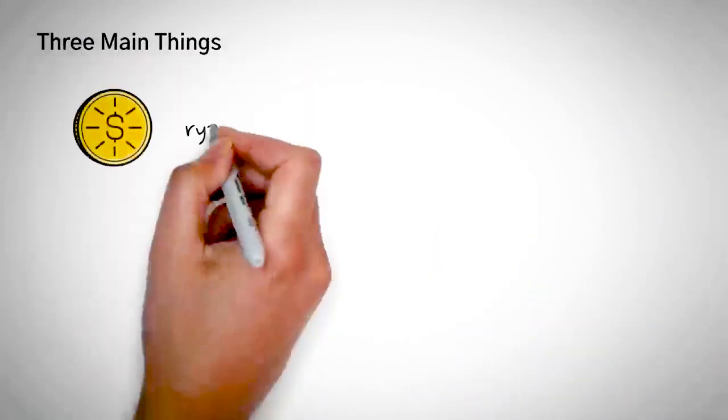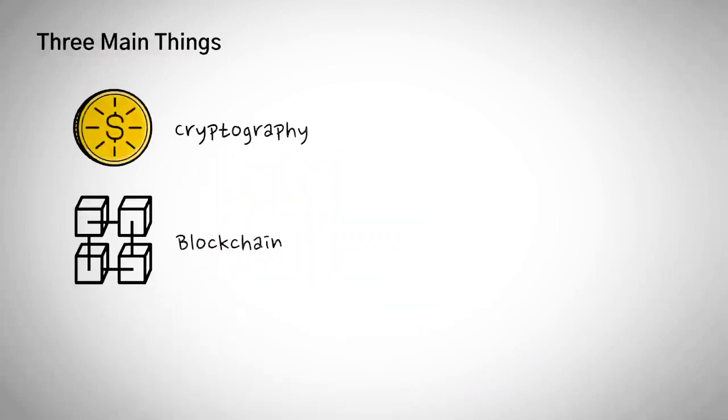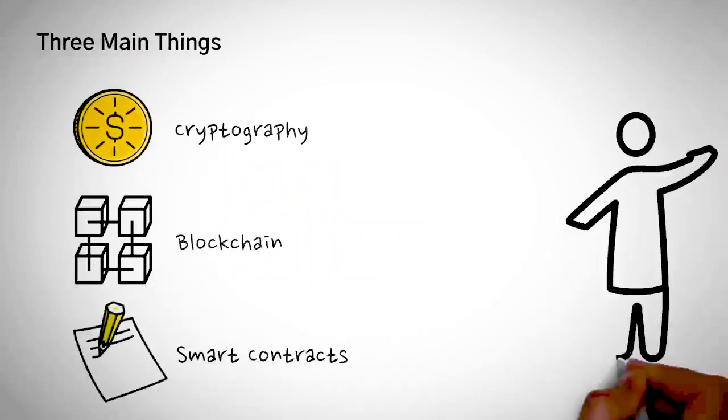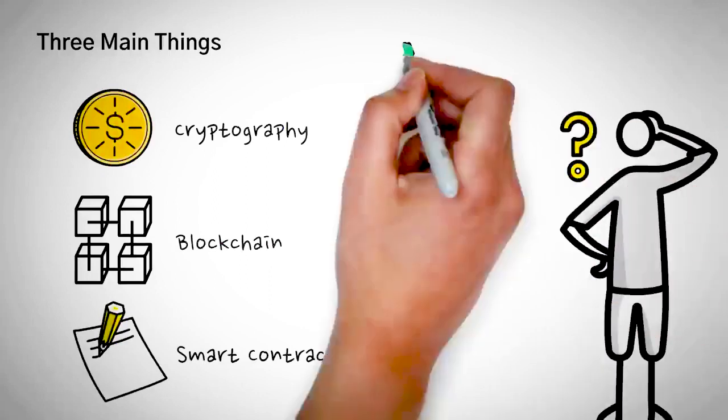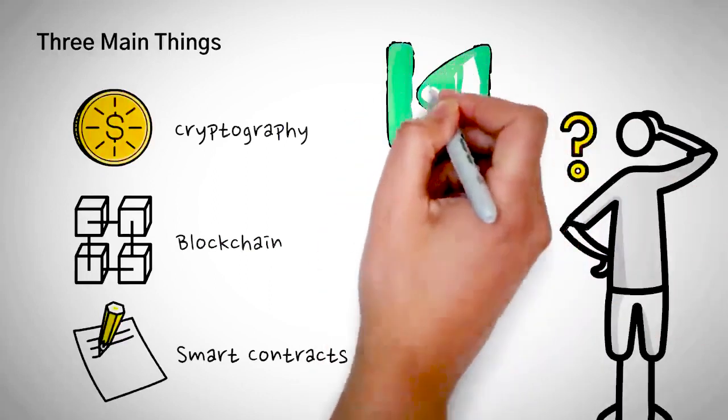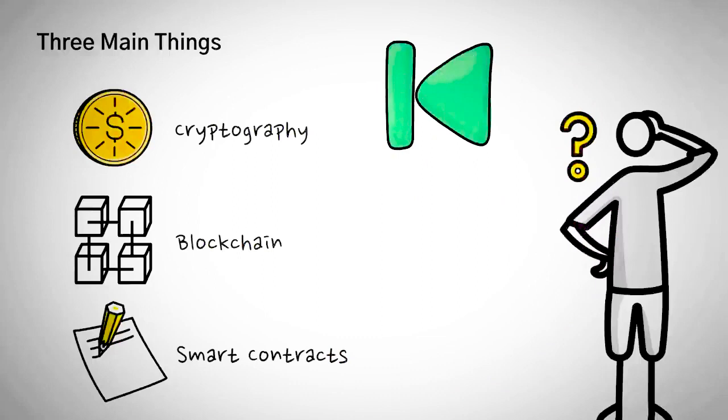Decentralized finance is built on three main things: cryptography, blockchain technology, and smart contracts. If you don't know what these are, we highly recommend that you check out our other videos on these topics, where we break these topics down so simply using stories and examples and analogies that even your grandfather could understand them.